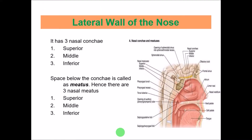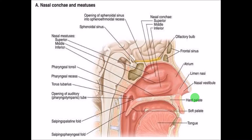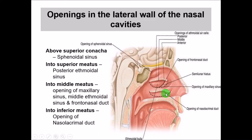Coming to the lateral wall of the nose: the lateral wall is not smooth but has conchae — three nasal conchae: the superior, middle, and inferior nasal conchae. Below each concha there is a space called a meatus. So there is a superior meatus, a middle meatus below the middle concha, and an inferior meatus below the inferior concha. Concha is the singular and conchae is the plural.